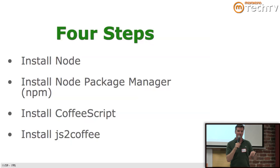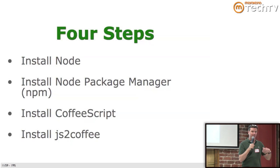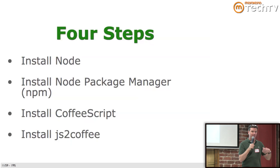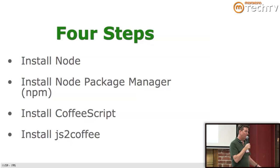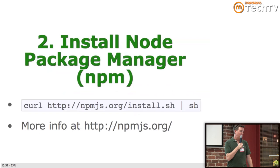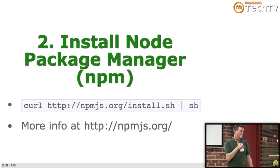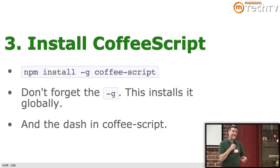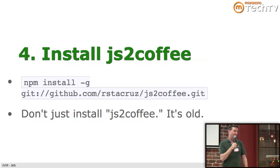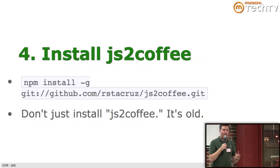Part one: installing CoffeeScript. There are four steps. You need to install Node — and you're not running a Node server on your server, this is just about installing CoffeeScript. Install Node Package Manager, install CoffeeScript, and install js2coffee. Don't forget the dash-G flag because this installs it globally so it'll be in your path. Install js2coffee — the JavaScript to CoffeeScript converter. If you do npm install -g js2coffee just like that, it will install a version that was new as of last July.